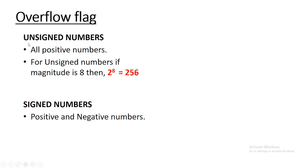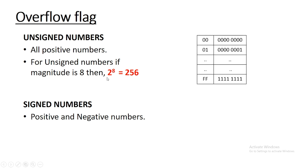In unsigned numbers, all numbers are positive by default. Using 8 bits you can represent 256 numbers — the range starts from 0 and ends at 255. So using 8 bits you can represent from all 0s to all 1s, which is 256 numbers. This is the range for unsigned numbers.